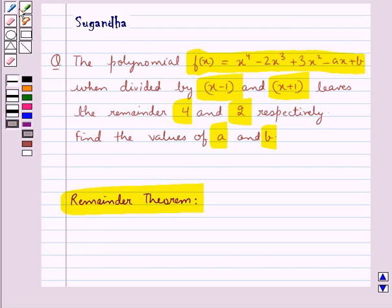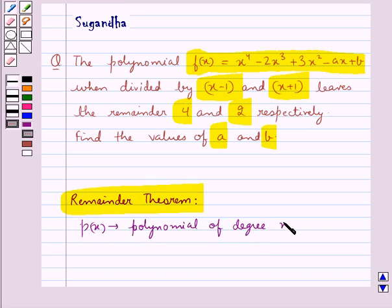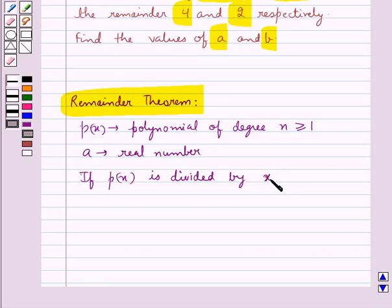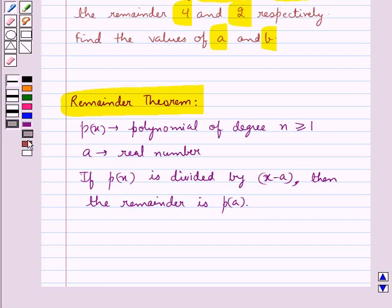According to the remainder theorem, let p(x) be any polynomial of degree n greater than or equal to 1, and let a be any real number. Now if the polynomial p(x) is divided by some linear polynomial x minus a, then the remainder is p(a). This is the key idea to be used for this question.